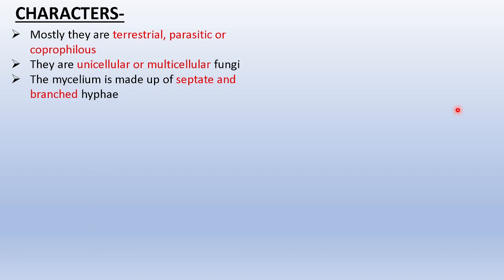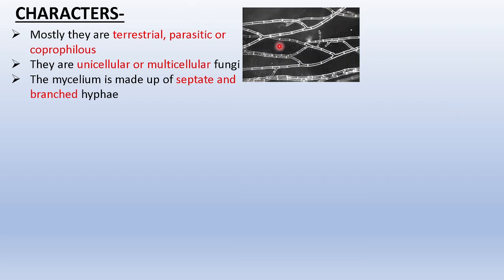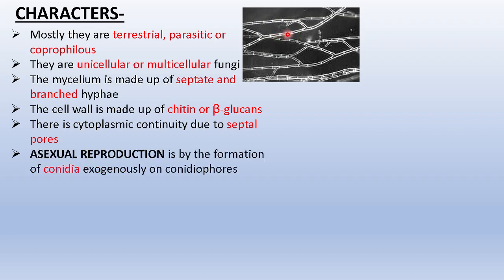The mycelium is made up of septate and branched hyphae — a key difference from Phycomycetes, where the hyphae are aseptate. Here there are separation walls, and the hyphae are also branched. The cell wall is made up of chitin or beta-glucans. There is cytoplasmic continuity due to septal pores, though each chamber has its own nucleus.